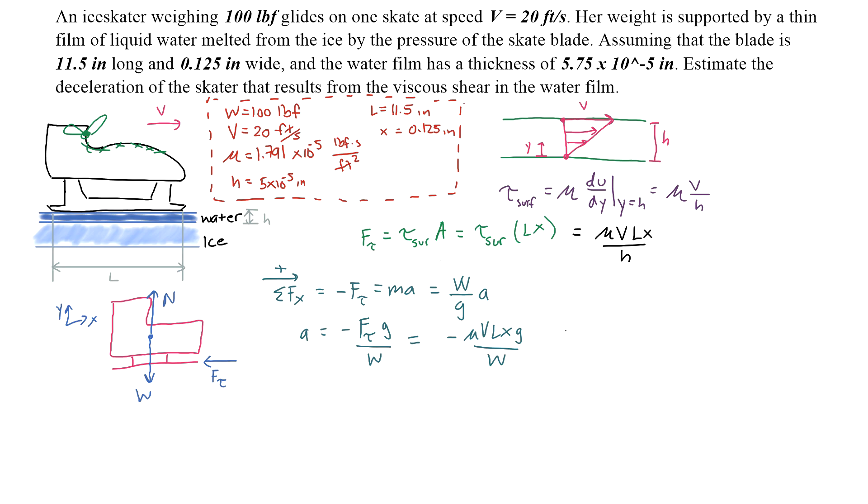The trickiest part is plugging in the correct units. I'm going to keep everything in feet, seconds, and pounds. The viscosity is pound-second per feet squared at 80 degrees Fahrenheit, so the value may change depending on temperature. The velocity is 20 feet per second.